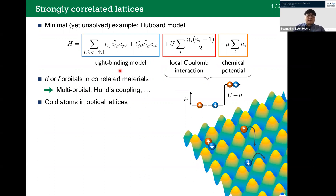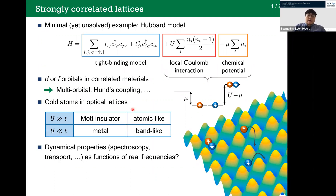This model is of interest not only in condensed matter physics. It can also be simulated using cold atoms in optical lattices. There is no general solution for this system, but we know some special solutions. When interaction U is much larger than hopping amplitude T, the electrons are localized due to strong Coulomb repulsion, so the system becomes a Mott insulator. In the other limit, electrons can delocalize, forming a band, leading to a metallic nature of the system.